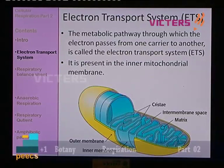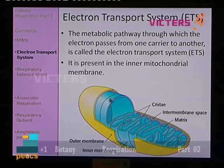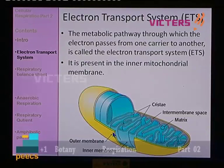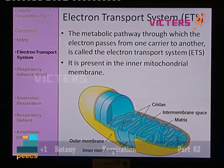The inner membrane is represented as blue color in this particular picture. The electron transfer system happens within this particular membrane. This diagram shows the overall picture of a mitochondrion. The in-foldings of the inner membrane are known as cristae. There is an outer membrane and a space between the outer and inner membrane called the inter-membrane space. The viscous content present inside the mitochondrion is known as the matrix.